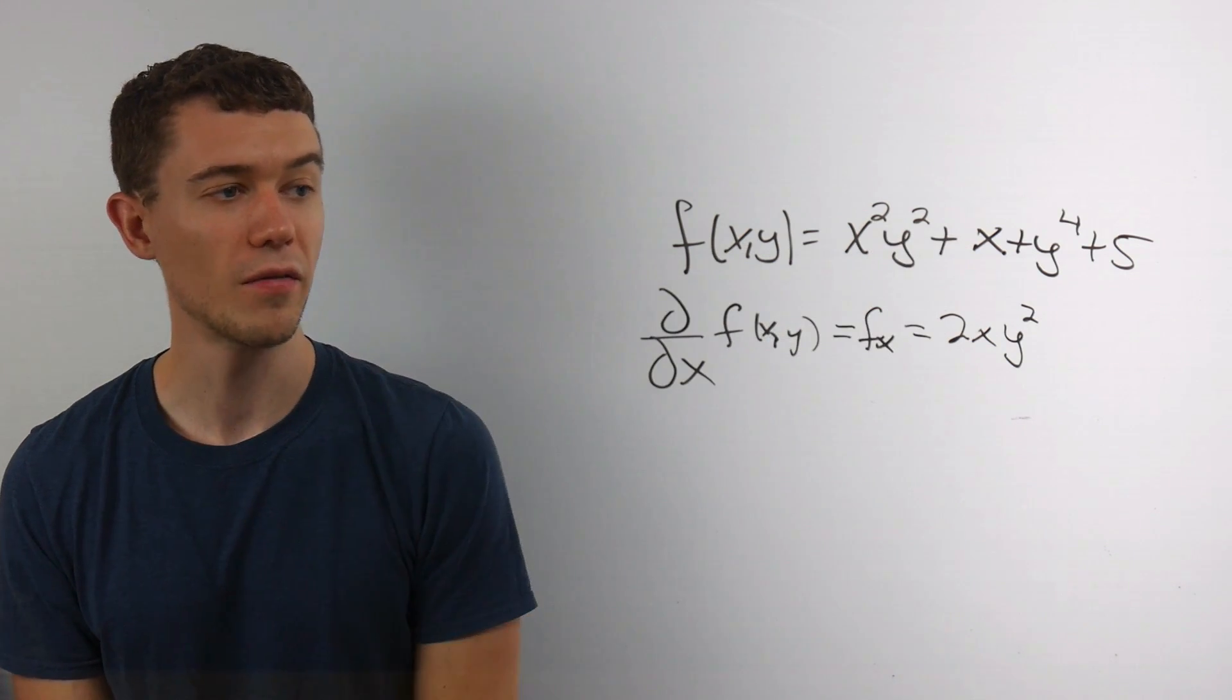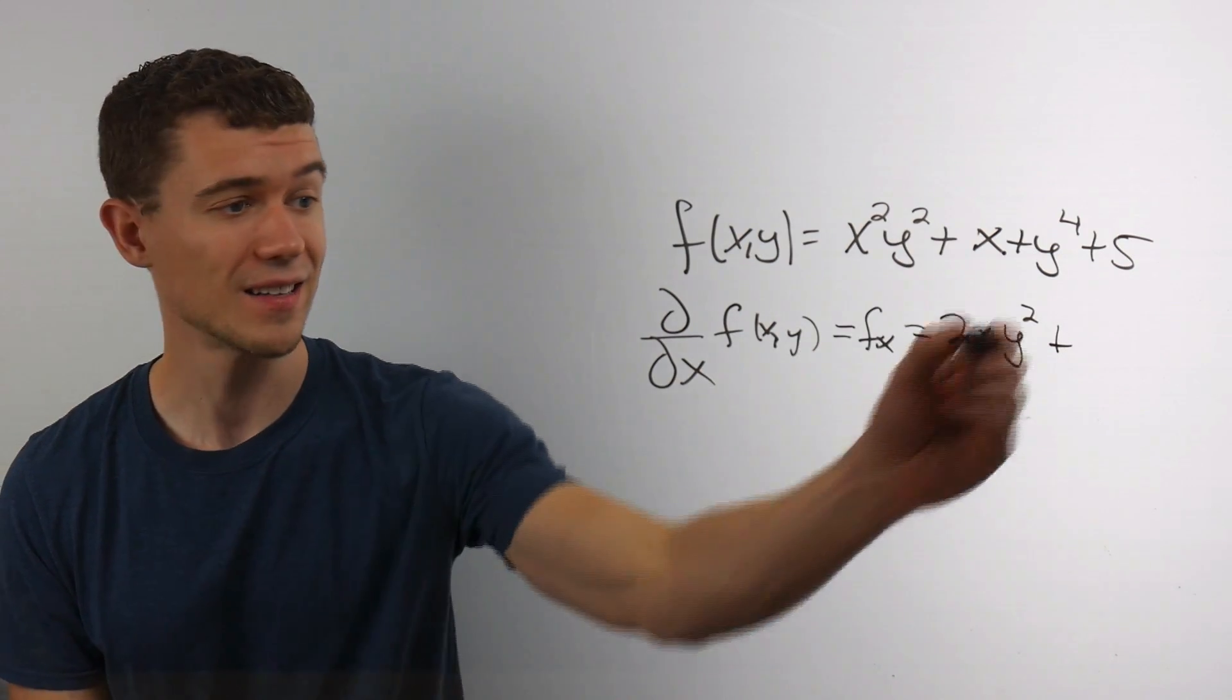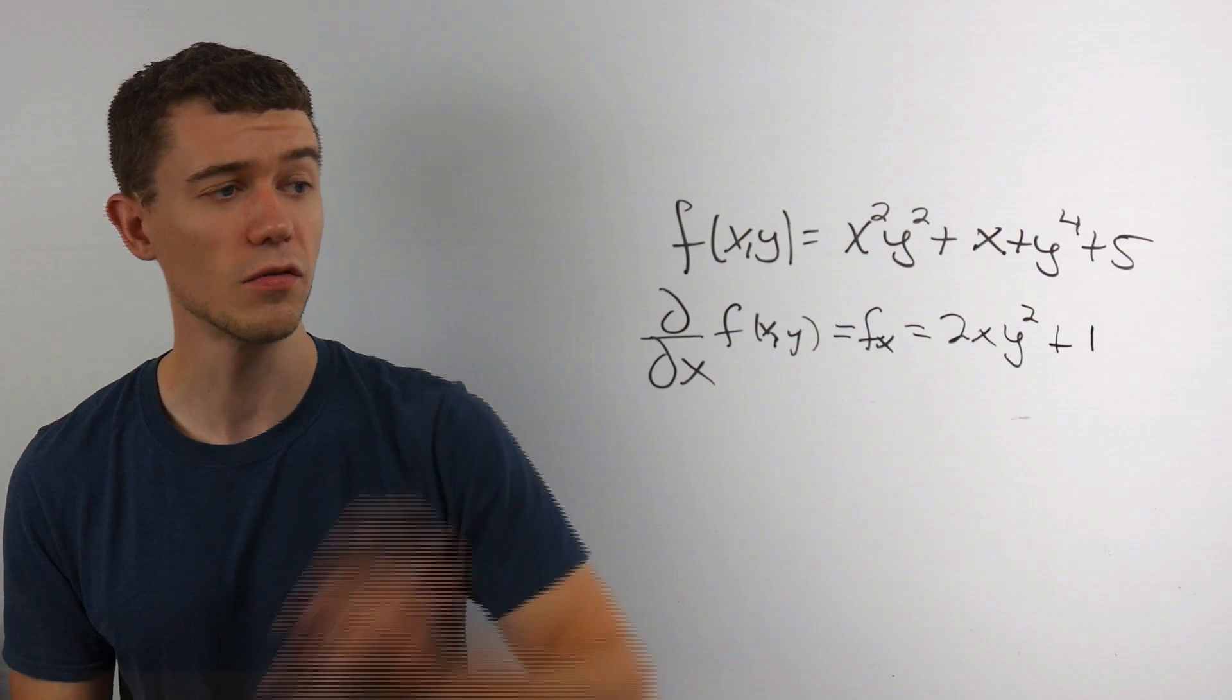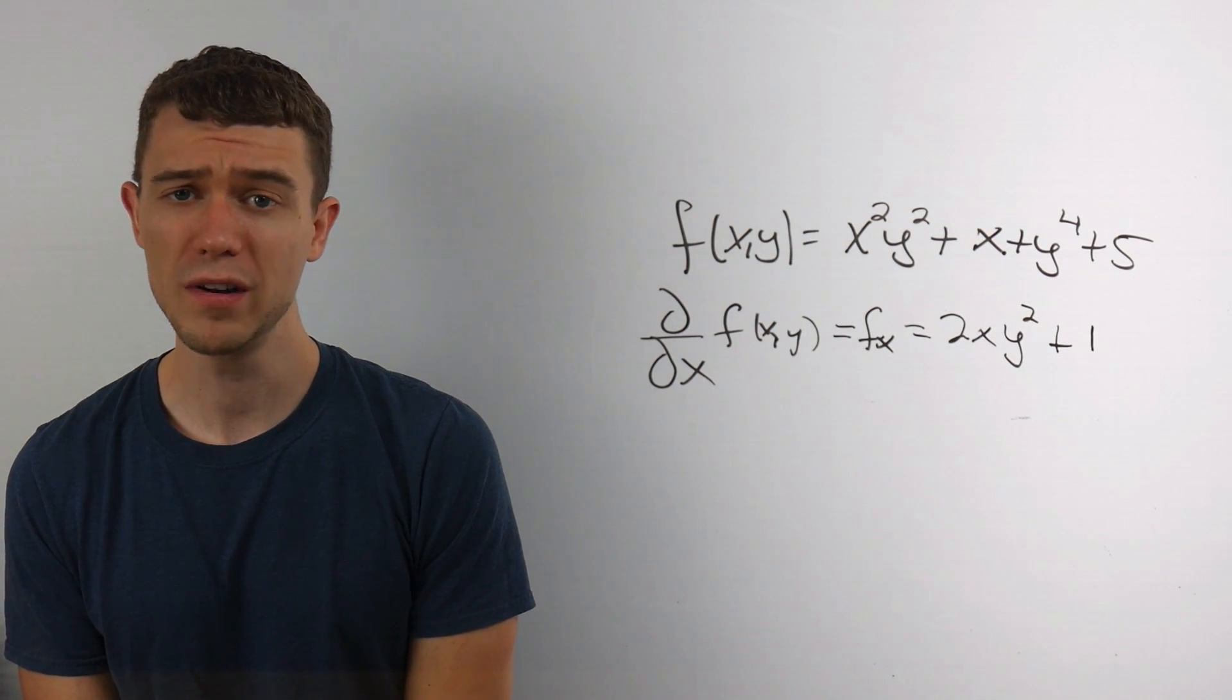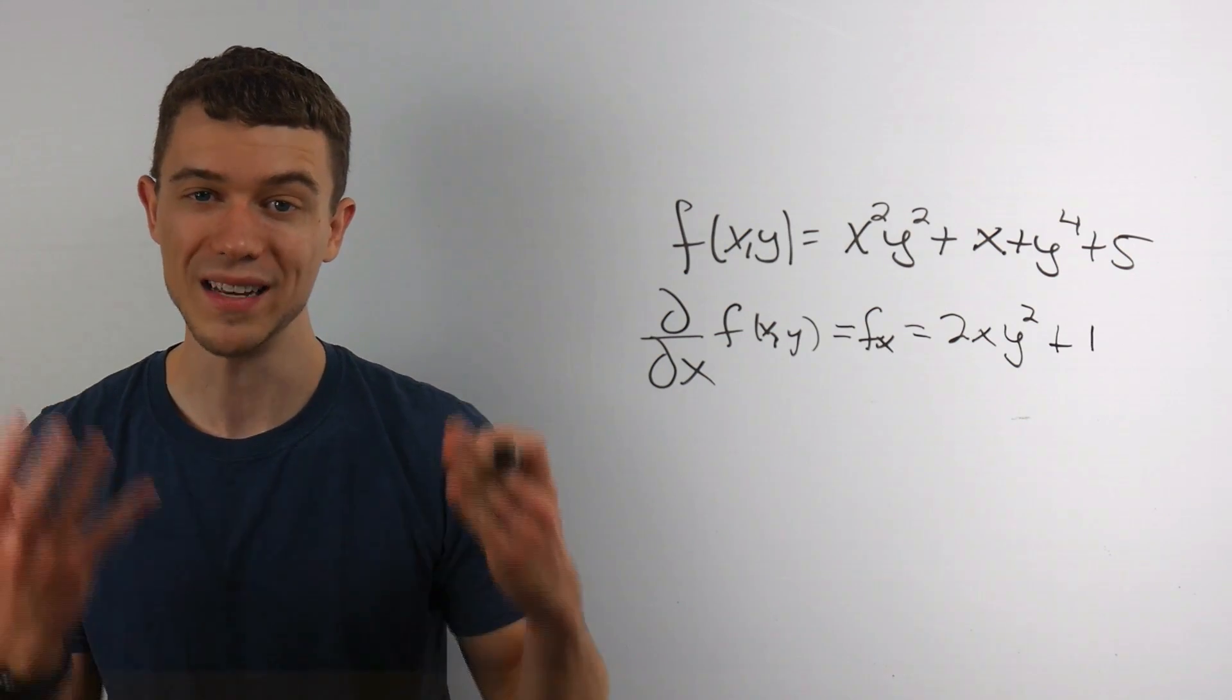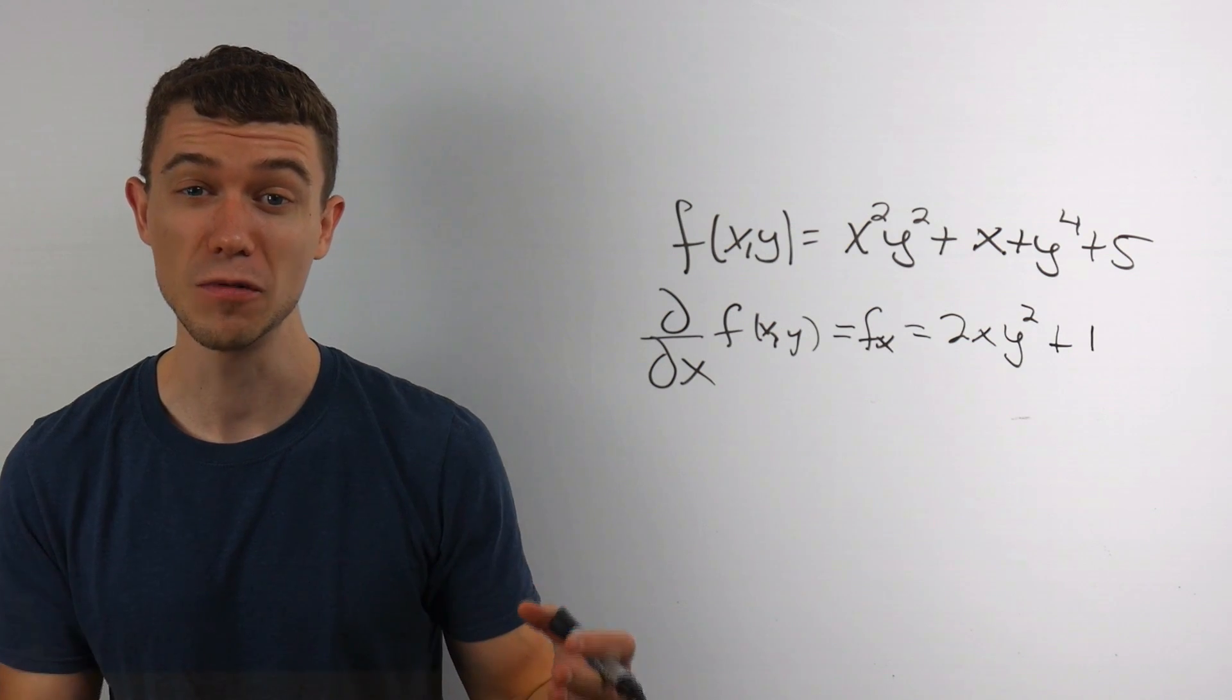What about the derivative of x? Well, the derivative of x with respect to x is still 1. What about y to the 4th? Well, the derivative of y to the 4th with respect to x is 0. Y is a constant here. The derivative of a constant is 0.